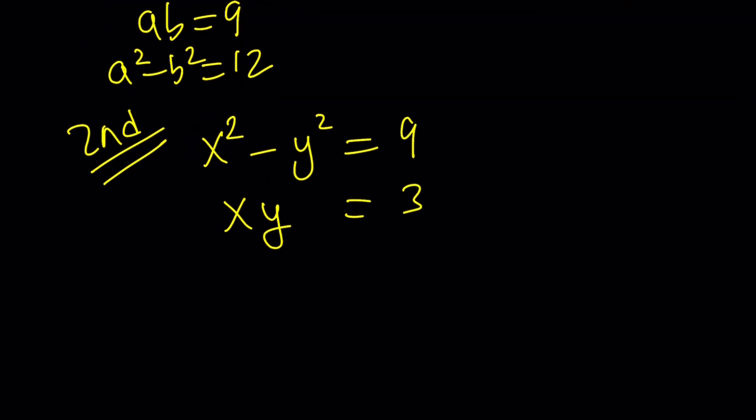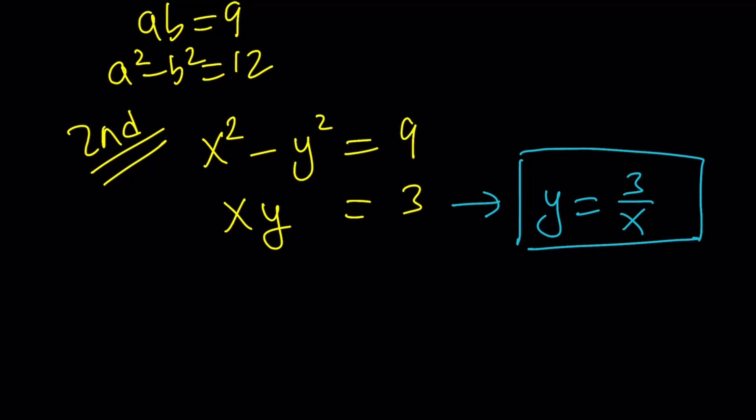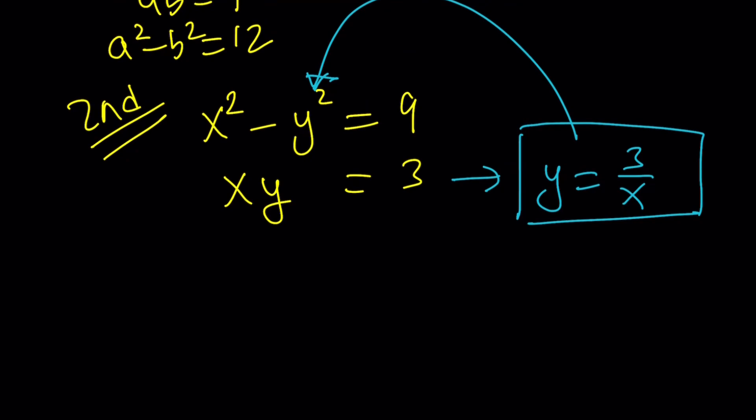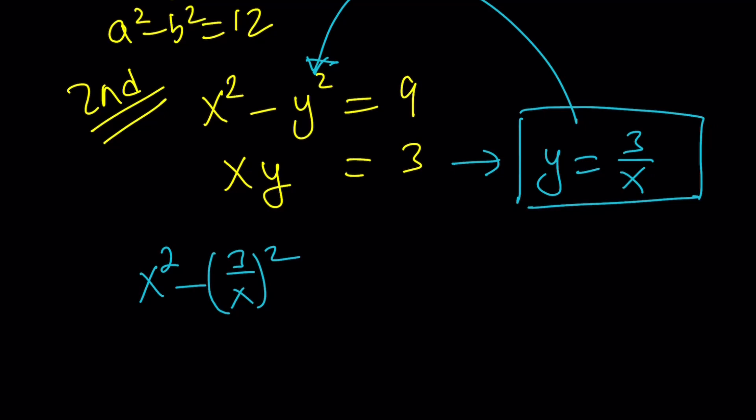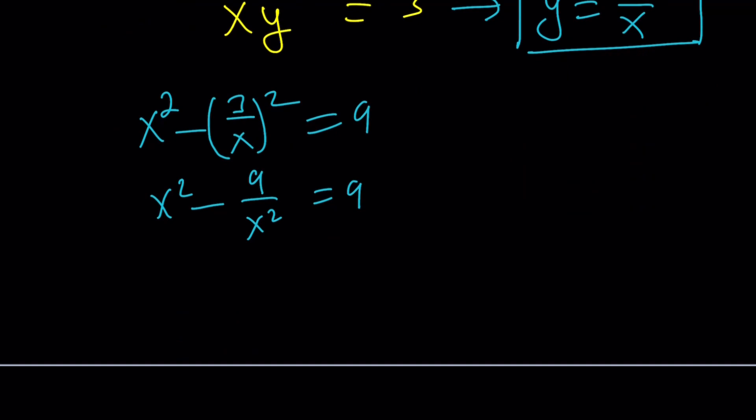So, here's what I did. I isolated the y from the second equation. So, I wrote the y as 3 over x and then substituted. That's pretty much straightforward method of solving things. You just substitute. So, replace y with 3 over x, square it, and this gives you x squared minus 9 over x squared equals 9.